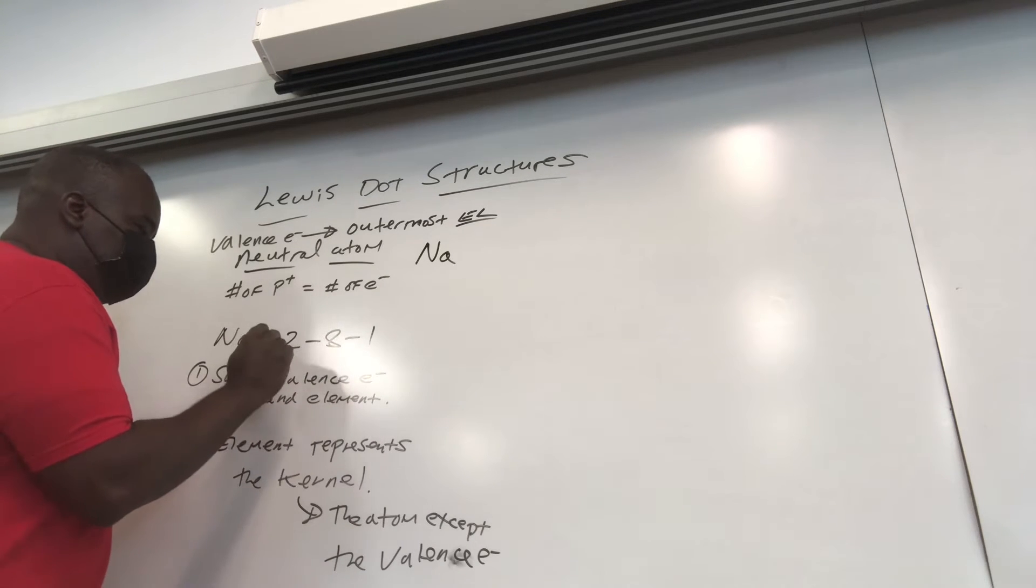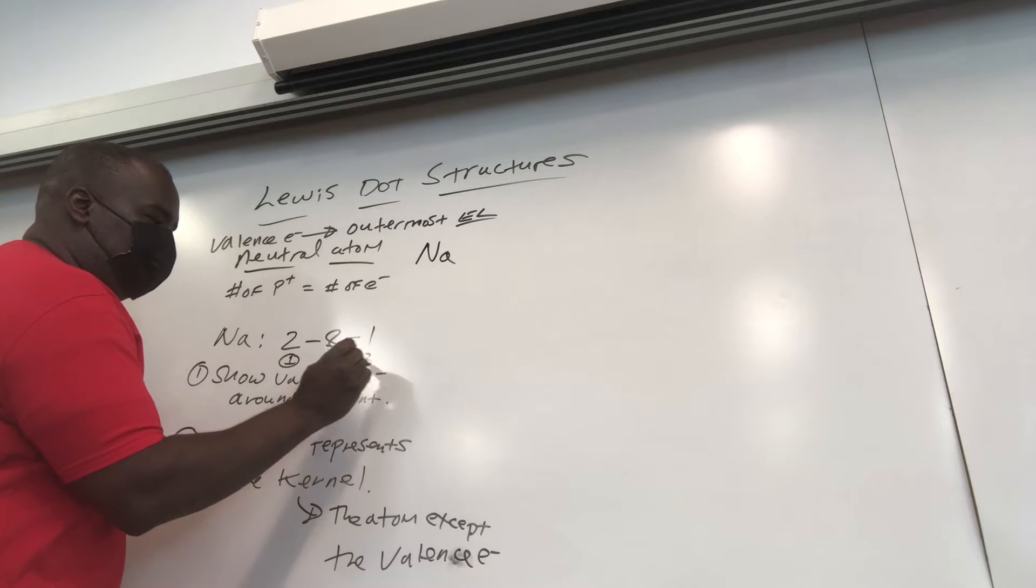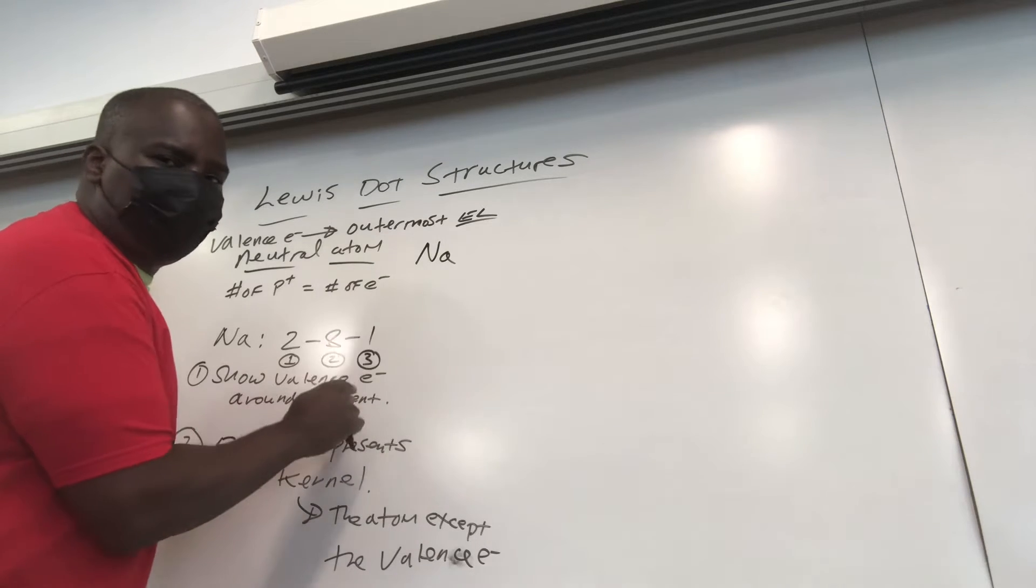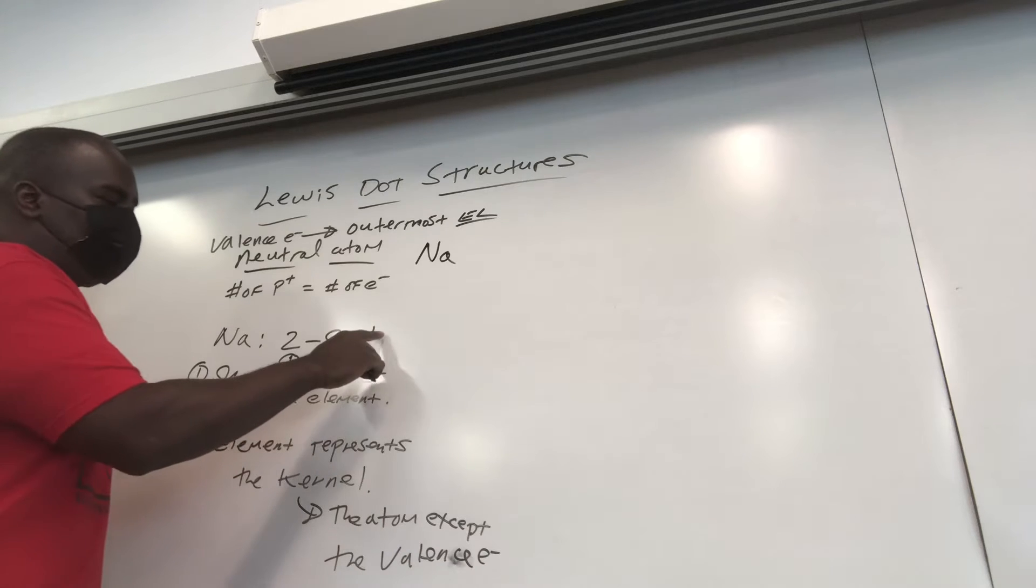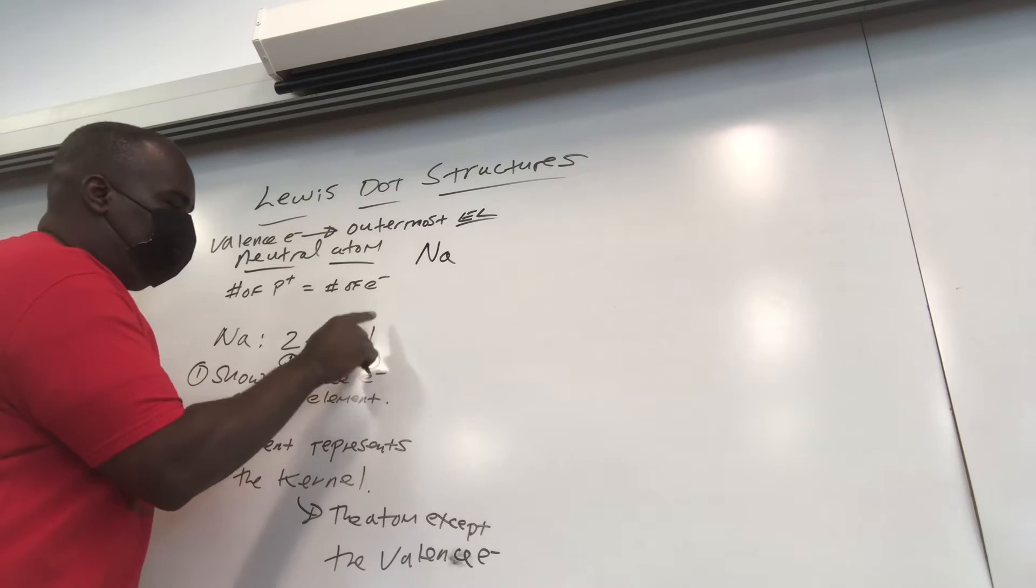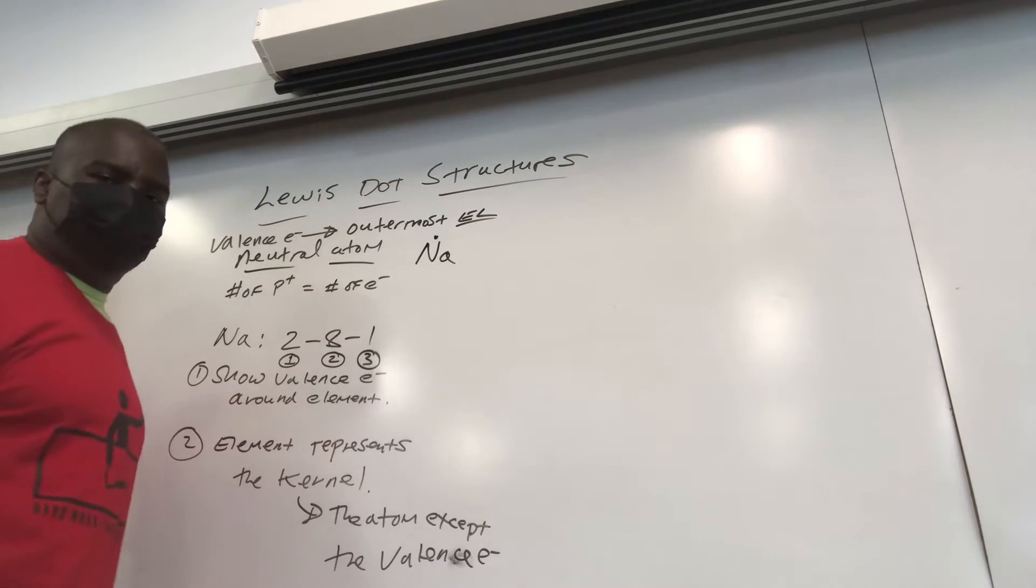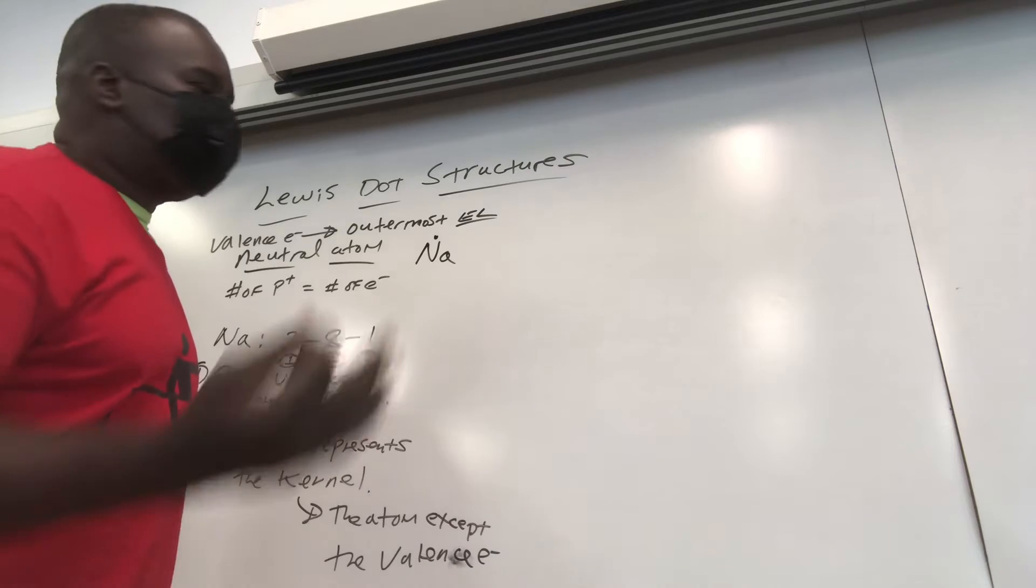So this is energy level number 1 where the 2 is. That's energy level number 2 where the 8 is. And this is energy level number 3. Energy level number 3 is the outermost energy level, okay? So inside of energy level number 3, there's only one valence electron for sodium. So sodium only gets one dot. No problem.